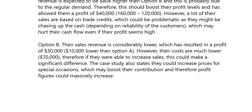My option B point: their sales revenue is lower, resulting in a profit of $30,000 — $10,000 lower than option A. However, their costs are much lower, and therefore if they're able to increase sales this could make a significant difference. The case study also states that they could increase prices for special occasions, which may boost contribution and therefore profit figures could massively increase. There is hope and optimism — many opportunities they could embrace — and all they need to do is find ways of increasing sales.